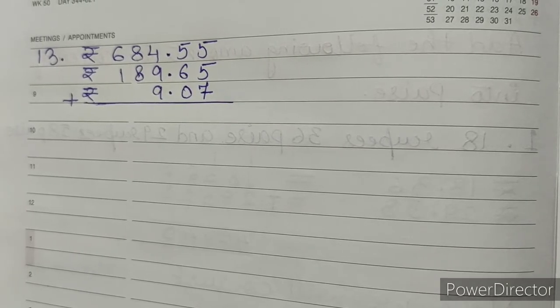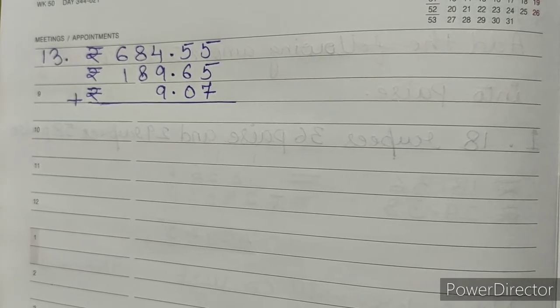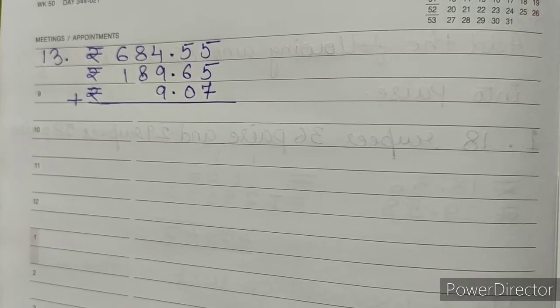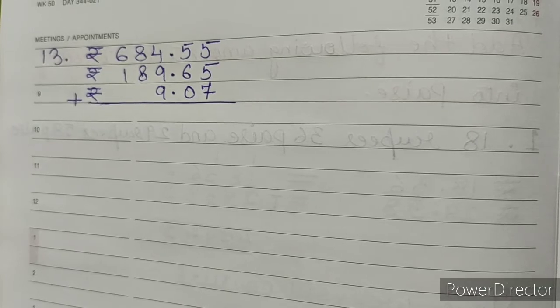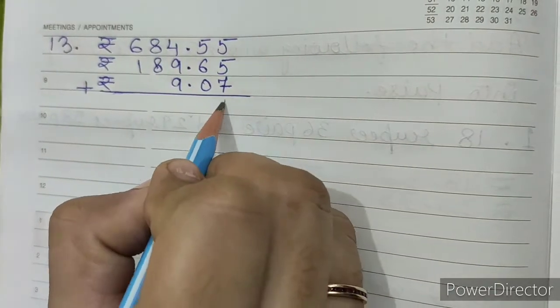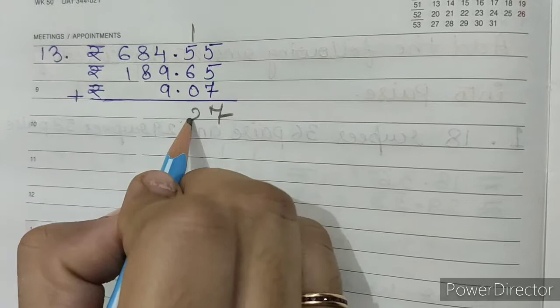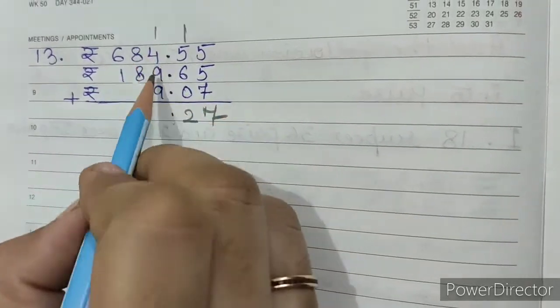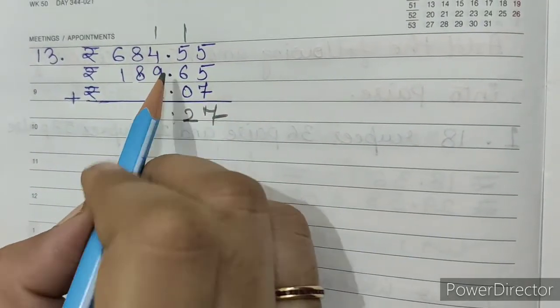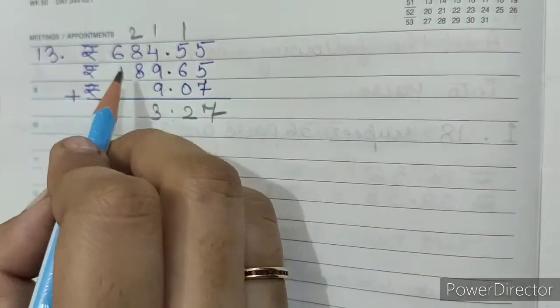Question number 13: rupees 684.55, rupees 189.65, plus rupees 9, plus rupees 9.07. Now 5 plus 5 equals 10, 10 plus 7 equals 17, we'll write 7 carry 1. 6 plus 6 equals 12, write 2 carry 1. 5 plus 9 plus 9 equals 23, write 3 carry 2.